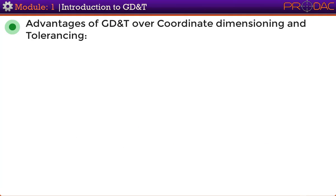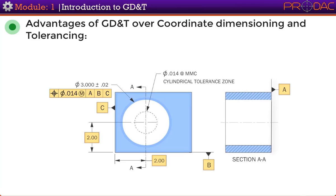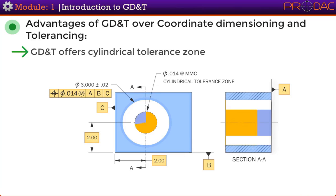When locating features with GD&T, there are three important advantages over the coordinate tolerancing system. First, GD&T offers cylindrical tolerance zones, which means uniform distance in all directions from true position. The cylindrical tolerance zone is circumscribed about a square tolerance zone like the one shown here, and it has 57% more area than the square in which the actual axis of the feature may lie.